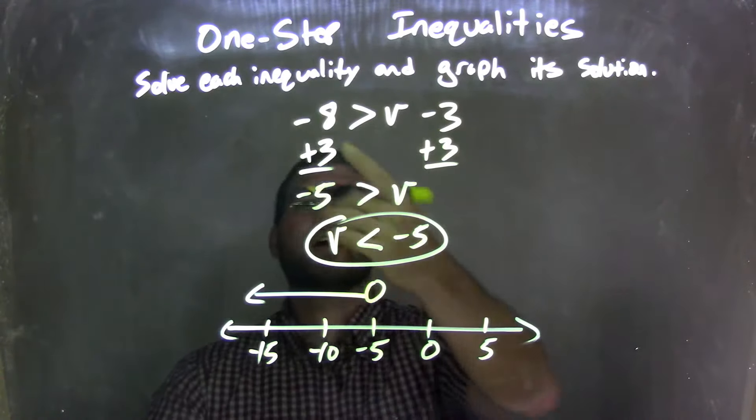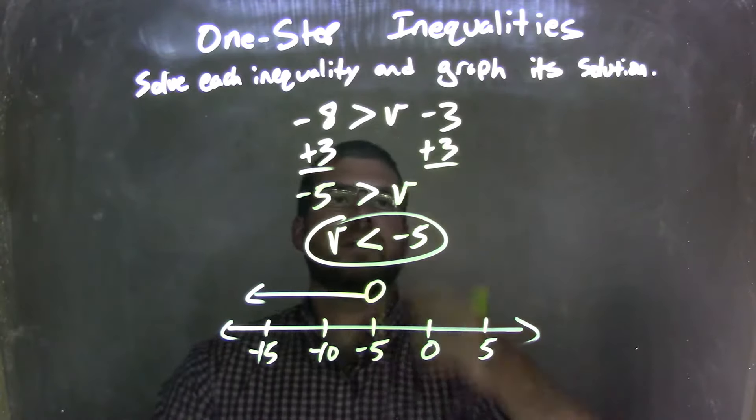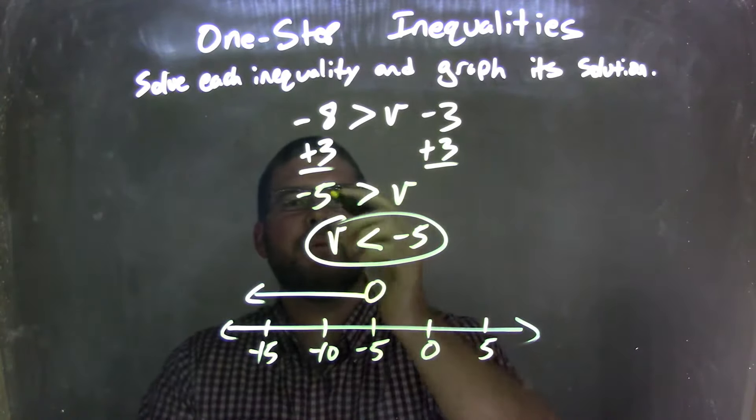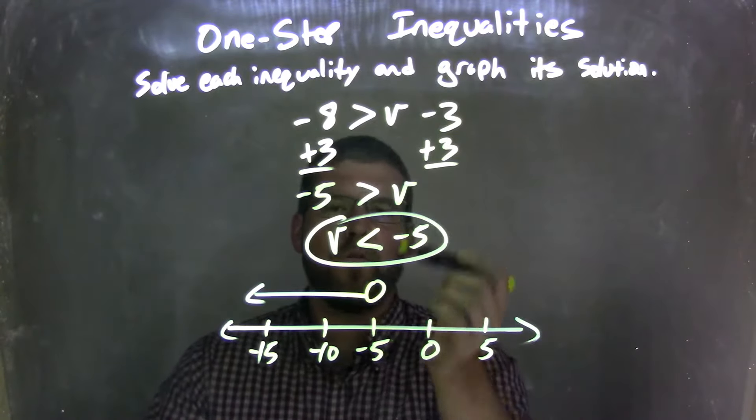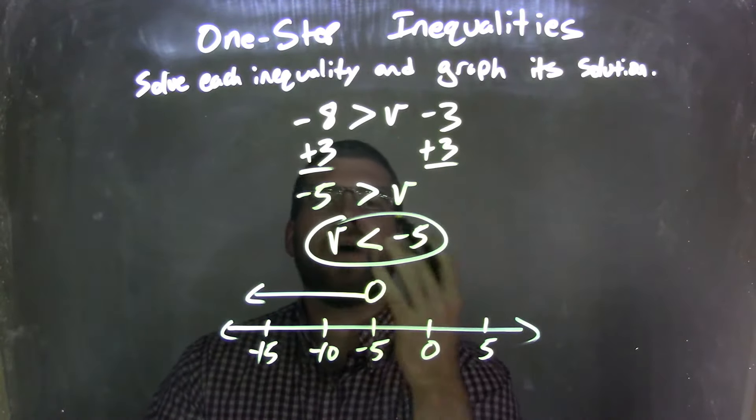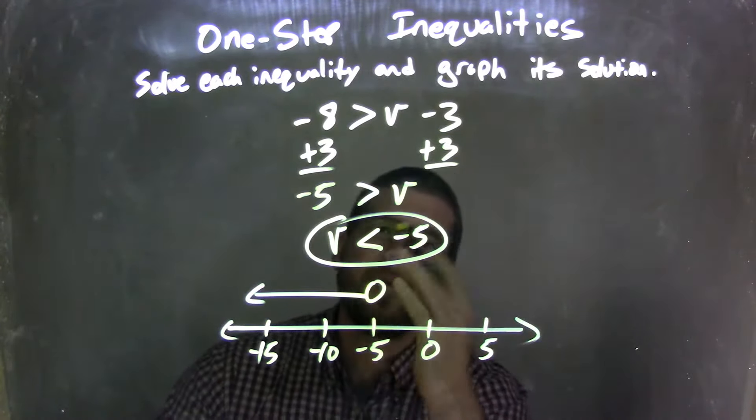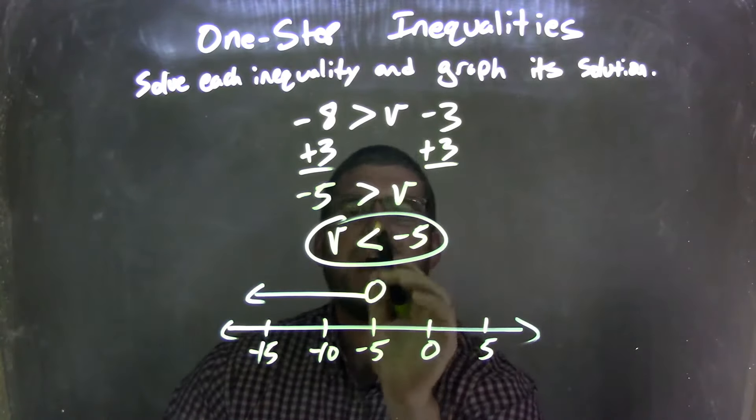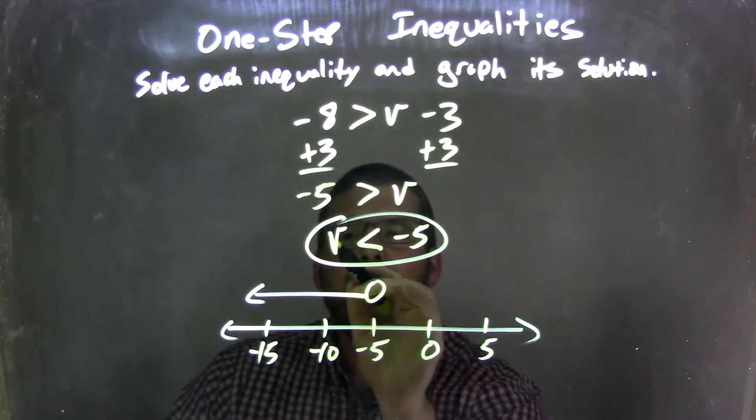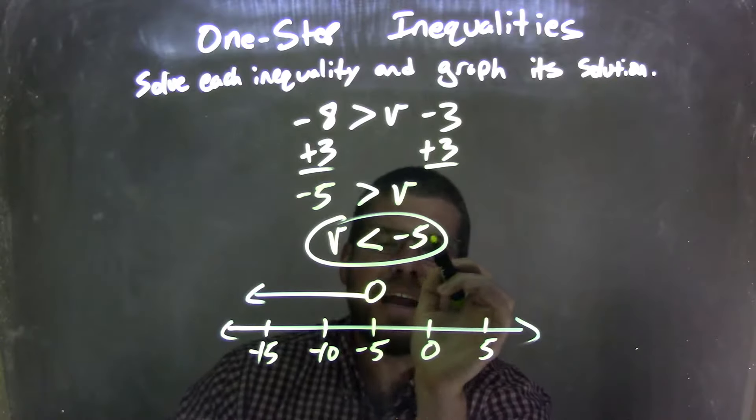So let's recap. We were given negative 8 is greater than v minus 3. I added a 3 to both sides, and so that left me with negative 5 is greater than v. But I needed to rewrite this to have v come first, so I flipped everything. And in doing the process, I had to flip the inequality as well. So v now is less than a negative 5.